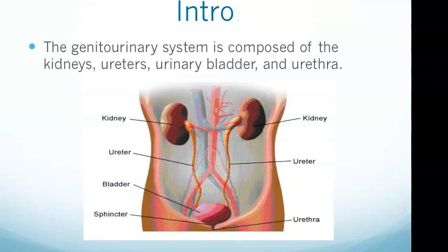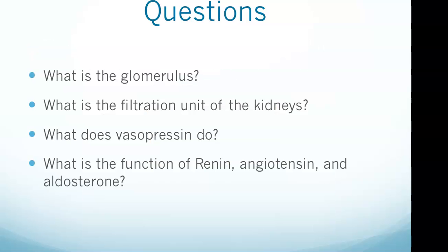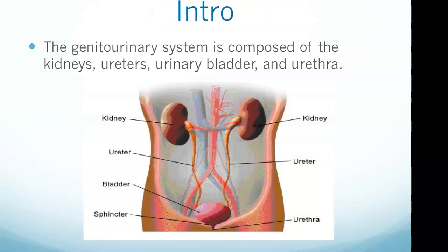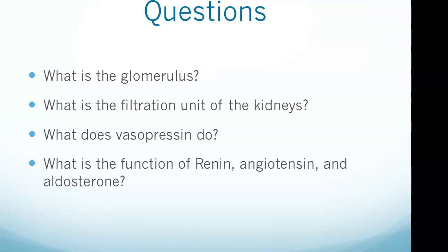Let's go back and address the question: What is the glomerulus? The answer is that it is a network of capillaries that contain pores, making it highly permeable to certain ions like sodium and potassium. That covers the glomerulus, and the filtration unit of the kidneys is the renal corpuscle.